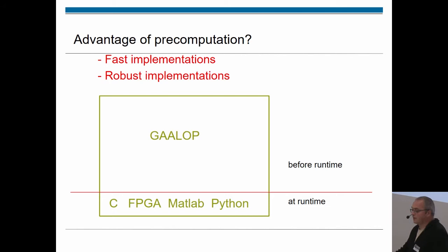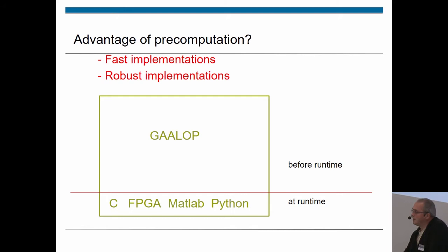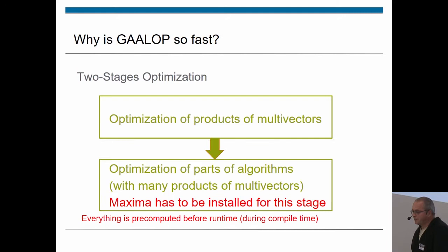As a side effect, this also leads to robust implementations. If we only have the most simple operations left at runtime, we also do not have as many sources of numerical inaccuracies. Our experience is that based on GALOPweb, our implementations are normally very robust compared to conventional solutions.